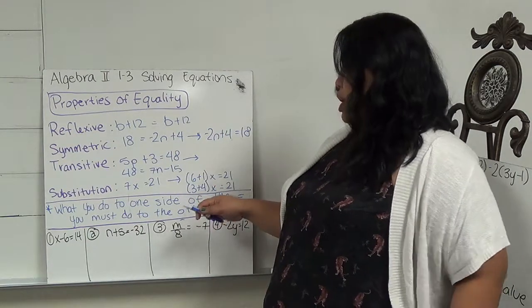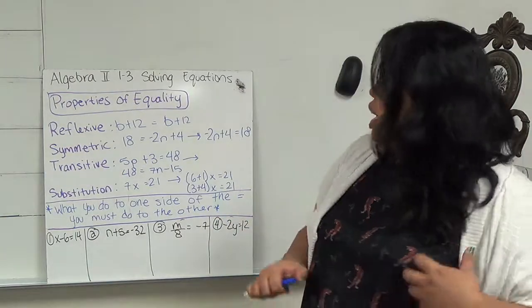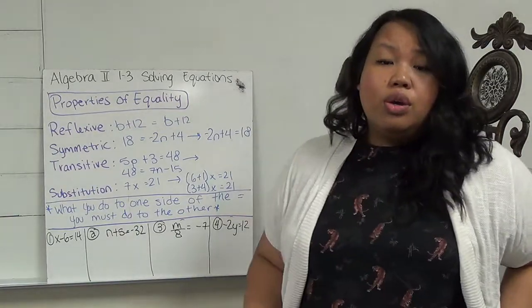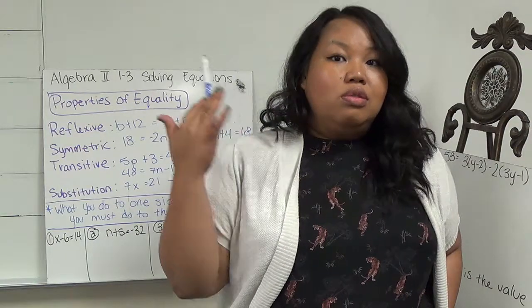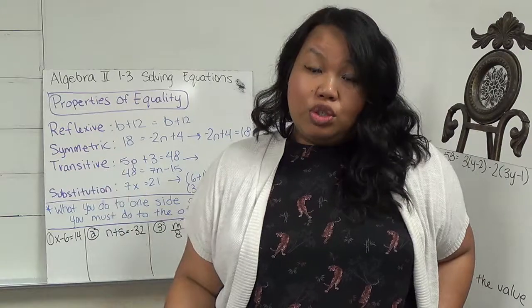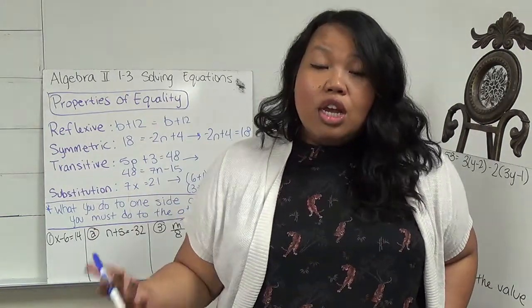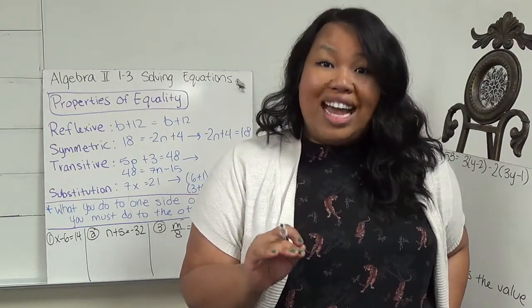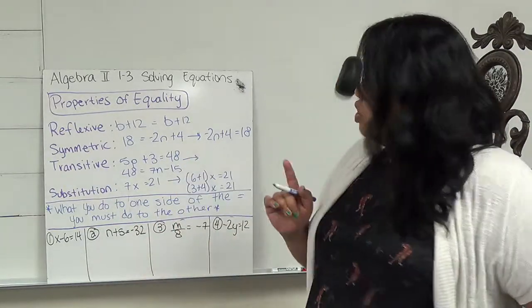The transitive property is something that if you remember in geometry, if you have student 1 who is the same height as student 2, and then student 2 the same height as student 3, you can assume that because they're both equal height with student 2, then student 1 and 3 are equal.